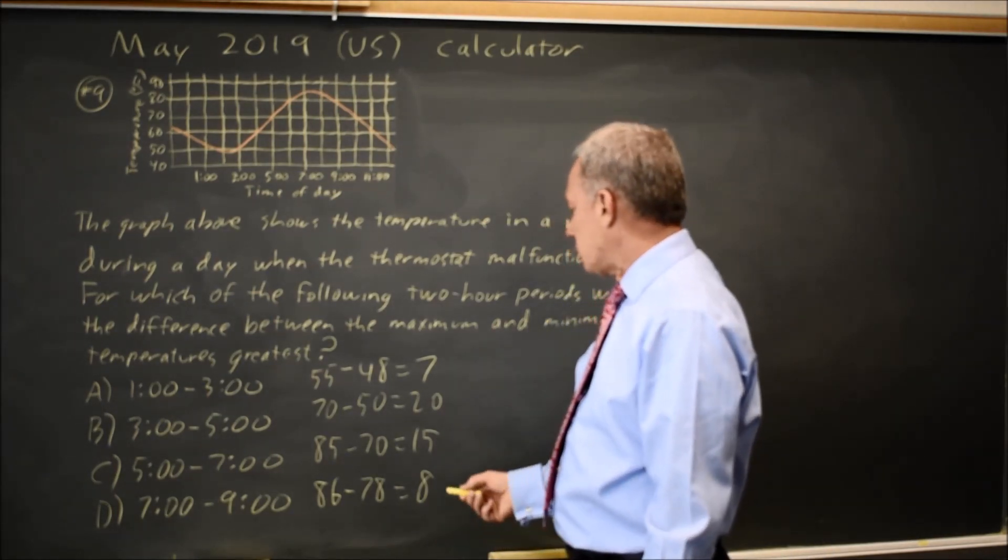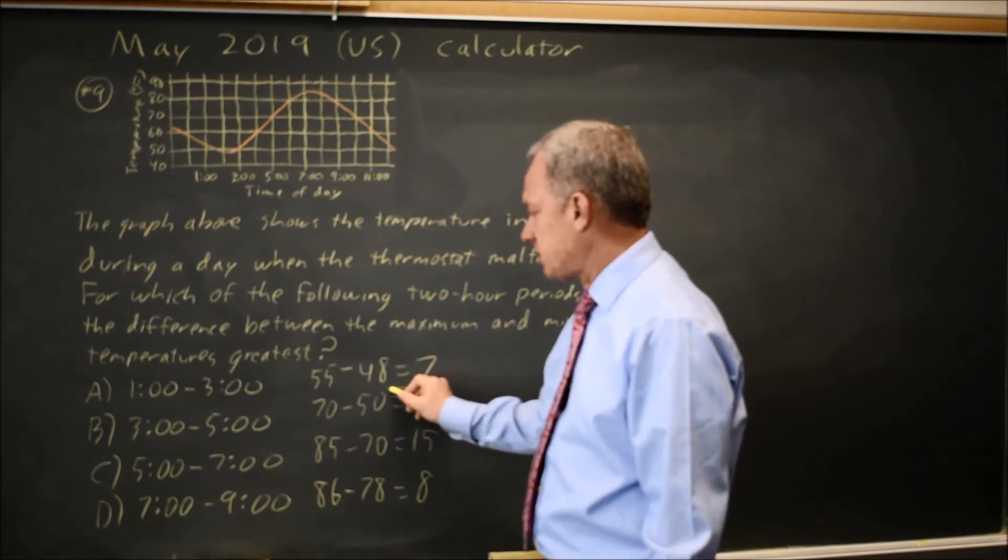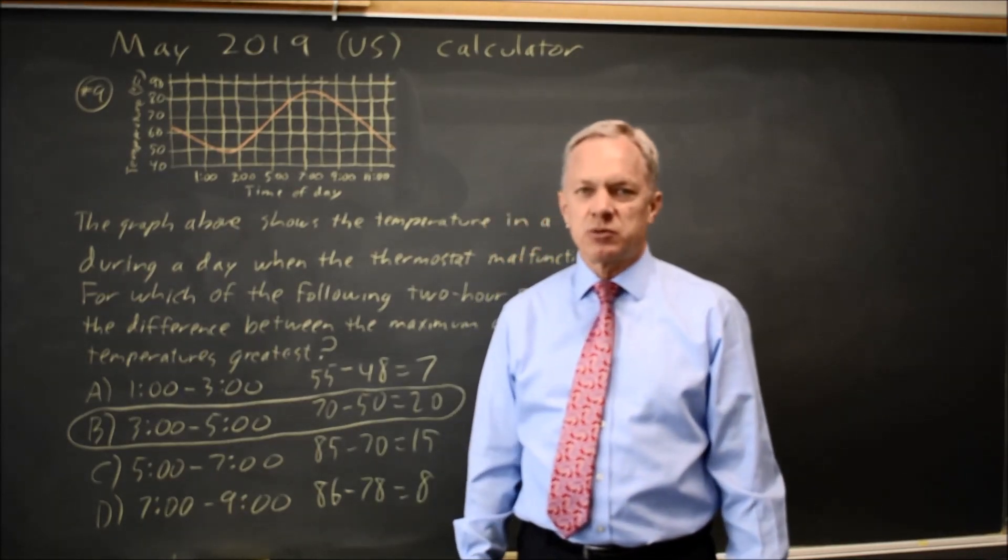And even if you read these slightly differently, that's not important. What they're asking is, during which period is the difference the greatest? And that is clearly 20 degree difference for choice B.